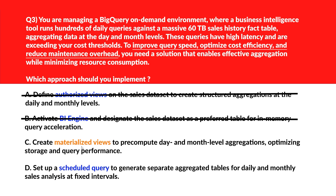Option C says create materialized views. Materialized views enhance query performance by storing pre-computed aggregations, reducing repeated computation and cost — let's keep this. Option D says set up a scheduled query. Scheduled queries generate full tables at intervals, adding maintenance overhead rather than providing on-the-fly optimization which materialized views provide. Option D is incorrect. We'll lock option C as the right choice.